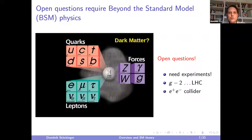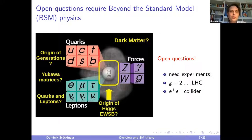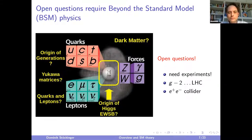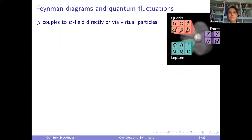Open questions motivating physics beyond the standard model include: dark matter (we know it exists but nothing in the SM explains it), the origin of generations of quarks and leptons, the origin of the Yukawa structure and fermion masses, and the origin of electroweak symmetry breaking and the Higgs mass. These questions are topics for the LHC, but can also be investigated via g-2 and any e+e- collider — there is a lot of complementarity.